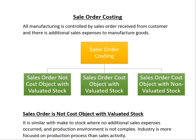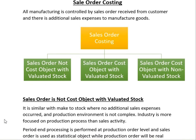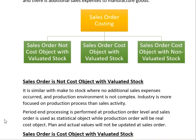The third is when the sale order is a cost object but stock is not valued at standard. In the first scenario it basically resembles the Make to Stock scenario. In Make to Stock, the production order, process order, or product cost collector is the cost object, so the sale order is not a cost object. This process is used in industries where the client is more focused on the production process and not on sales expenses or sales activity. The stock is evaluated stock.